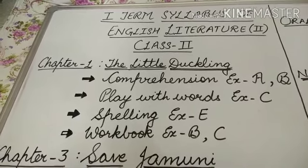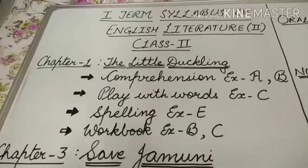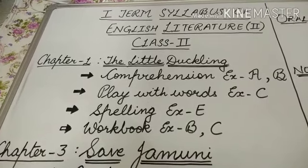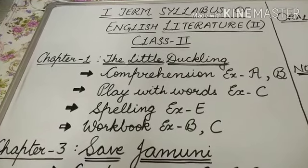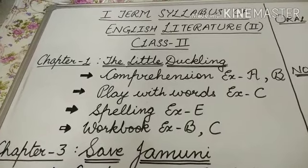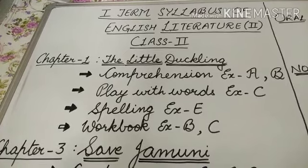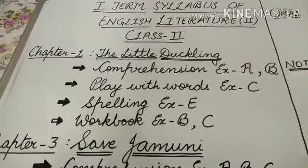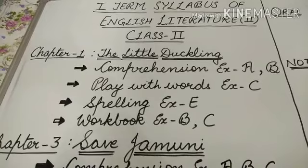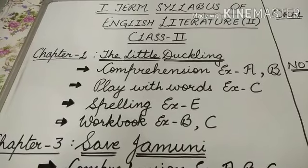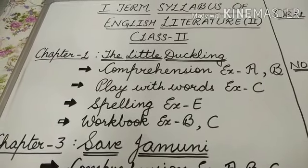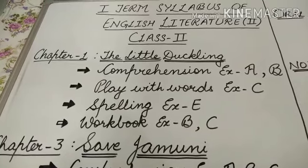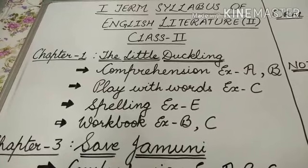Lesson No. 1, The Little Duckling. Comprehension Exercise A and B, Play with Words Exercise C, Spelling Exercise E from the reader book. And from the workbook, Exercise B and C is included in this lesson.